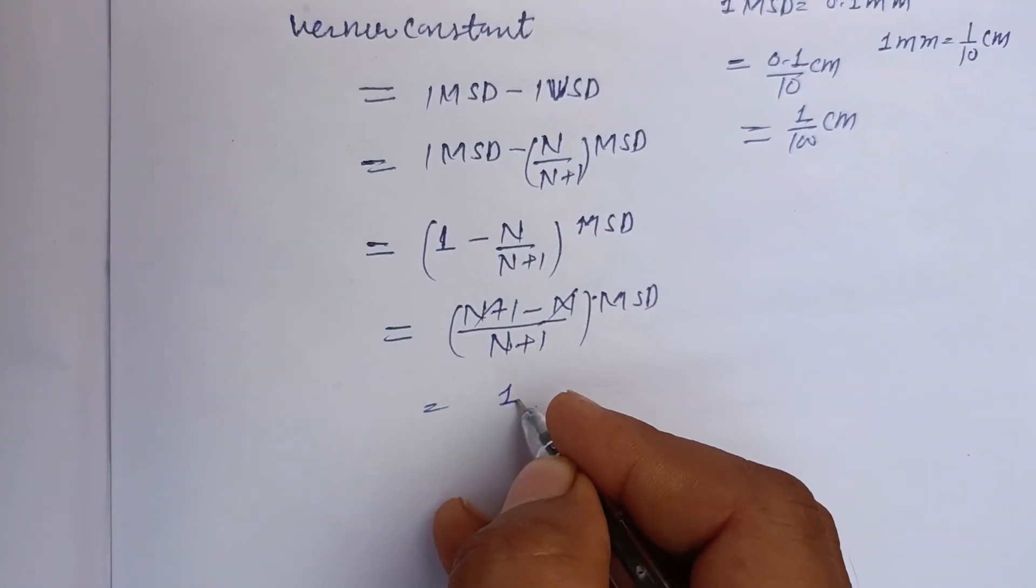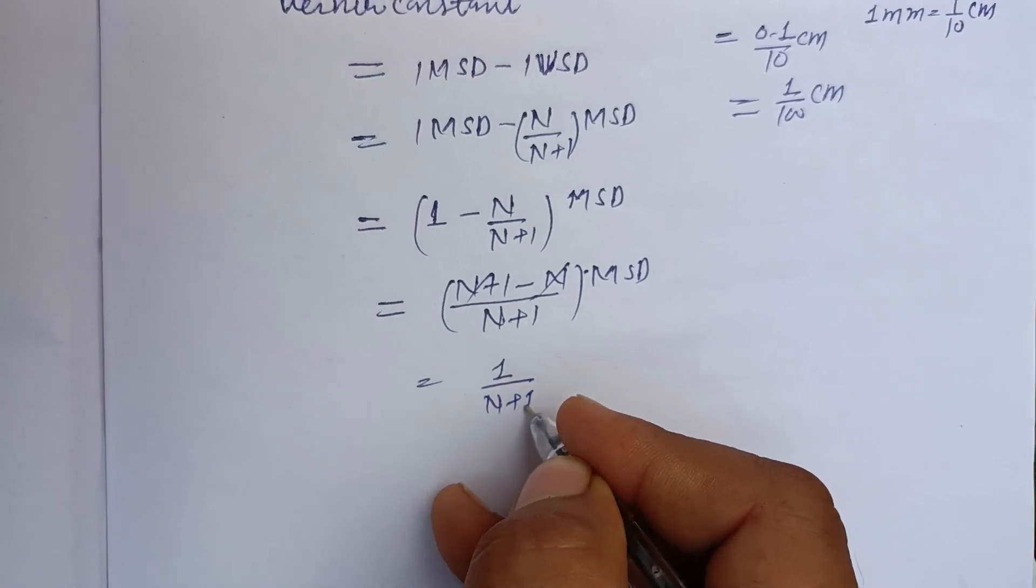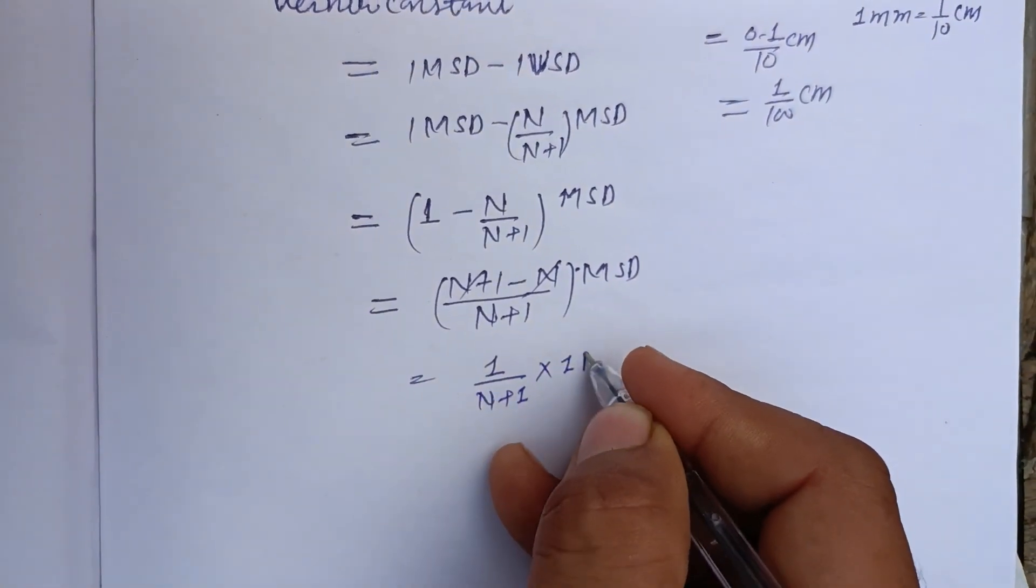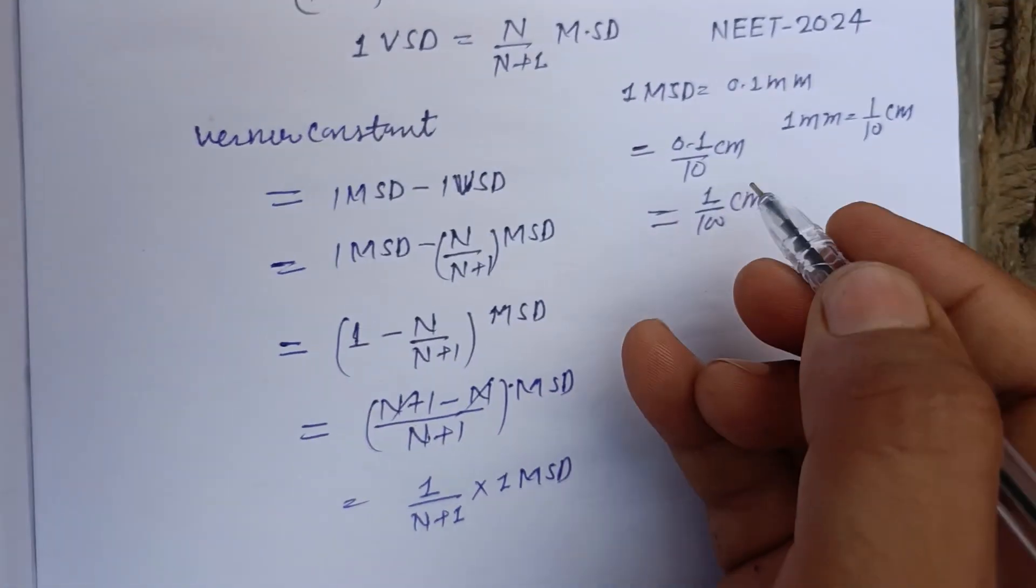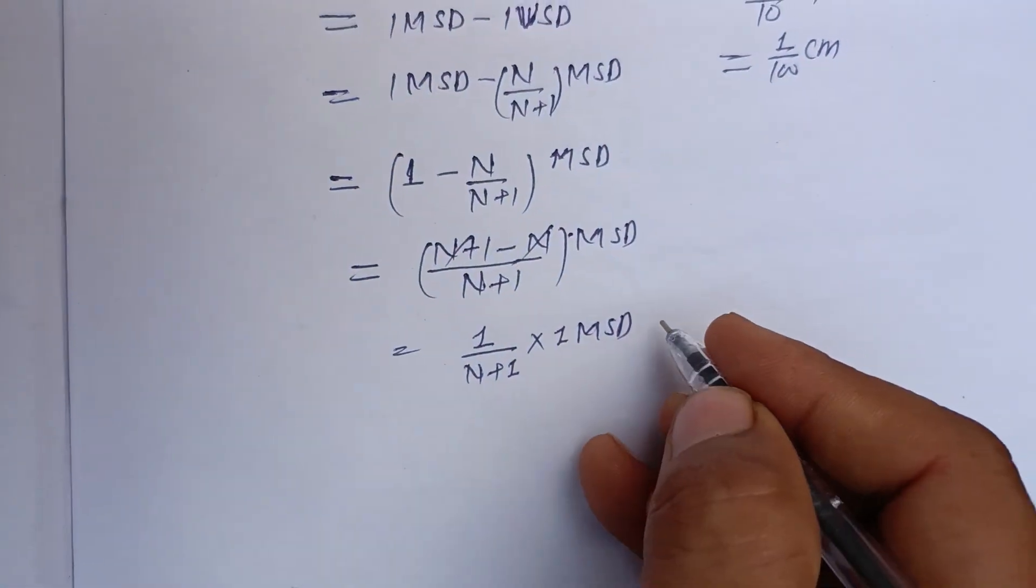And N cancels, giving 1 upon N plus 1 into 1 MSD. And 1 MSD is here which is 1 upon 100 cm.